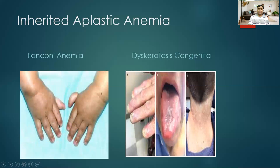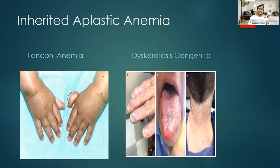In Fanconi anemia there can be microcephaly, facial abnormalities, and the classical finding of radial hypoplasia. I am showing this picture because it can appear as an MCQ — when you are diagnosing aplastic anemia, always check for limb deformities. The second inherited condition is dyskeratosis congenita: you can see dystrophic nails, leukoplakia, and hyperkeratosis of the skin of the neck. These are the clues for an inherited cause of aplastic anemia.